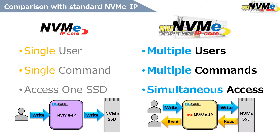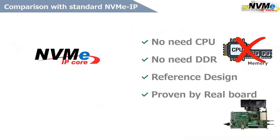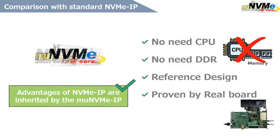The MU NVMe IP core can support multiple commands from multiple users, enabling simultaneous user access to one NVMe SSD. The advantages of the conventional standard NVMe IP core — no need for a CPU or external memory, and the proven reference design that can demonstrate actual performance — are inherited by the MU NVMe IP core.